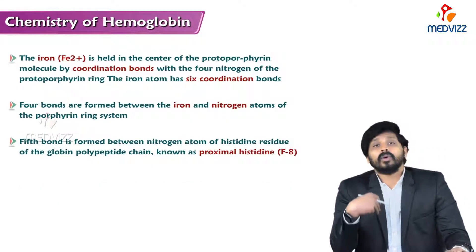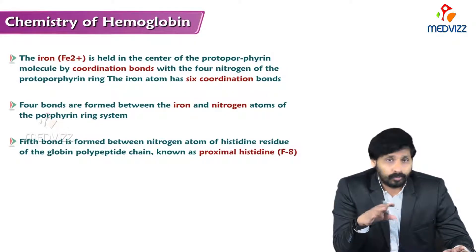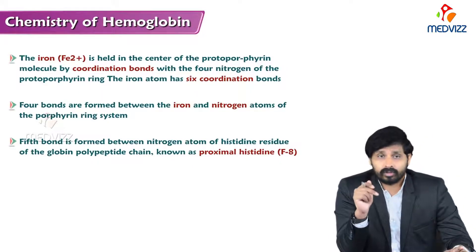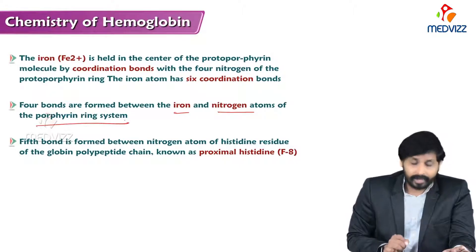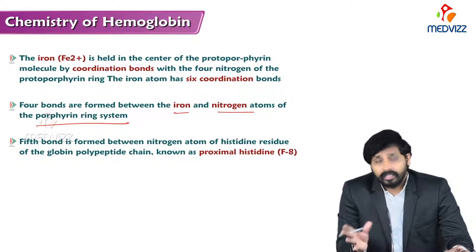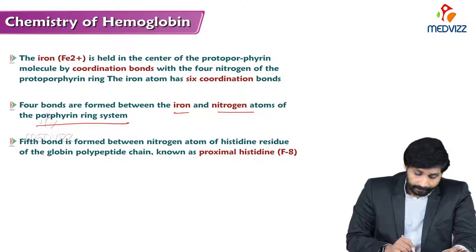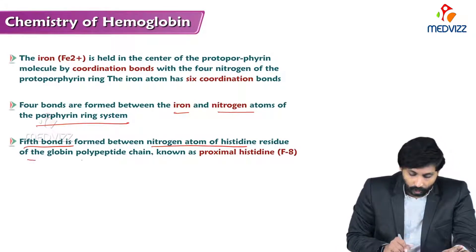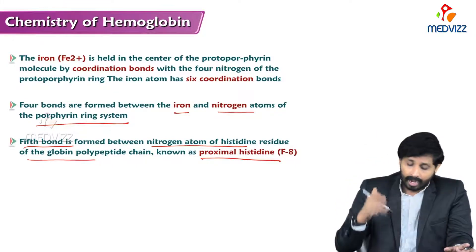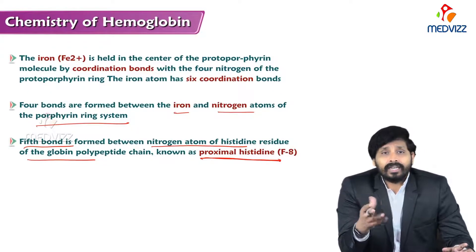The iron is held at the center of the protoporphyrin molecule by coordination bonds with four nitrogens of the porphyrin ring. Iron has six coordination bonds in total — four bonds are formed between iron and the nitrogen atoms of the porphyrin ring, leaving two bonds remaining. The fifth bond is formed between iron and the nitrogen atom of a histidine residue of the globin chain, known as proximal histidine.